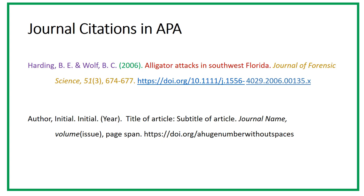After the journal name, add a comma, and the volume number is in italics. Immediately after the volume, end the italics, and in parentheses put the issue number, close the parentheses, then a comma and a space, and the page span of the article. Close the publication information with a period.